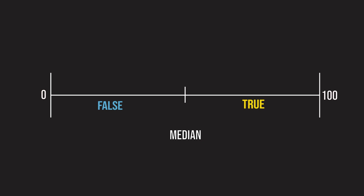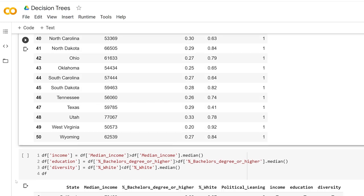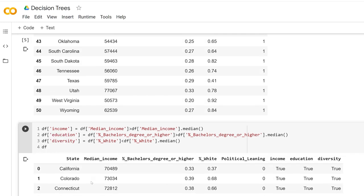We'll convert these continuous variables into binary or Boolean variables by setting the value equal to false if the value is less than the median, and true if it's greater than the median. These are now Boolean features.